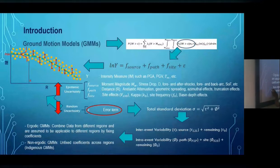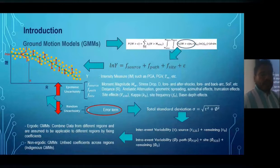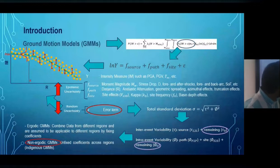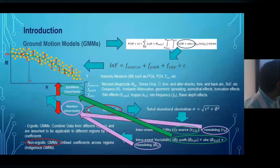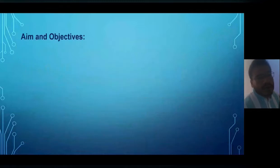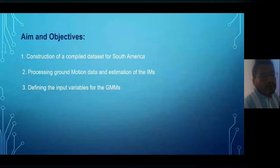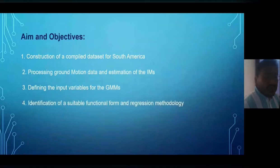A non-ergodic ground motion model aims to reduce random uncertainty and increase epistemic uncertainty. My main objectives are four, and I will talk about each of them in the next slides.